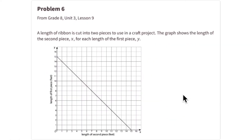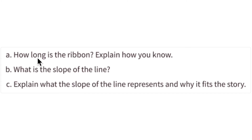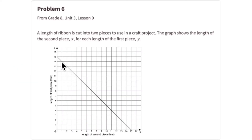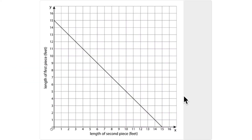This is problem number six. A length of ribbon is cut into two pieces for a craft project. The graph shows the length of the second piece on the x-axis and the length of the first piece on the y-axis. The question asks: how long is the ribbon altogether, and what is the slope of this line and what does that slope mean in the story?